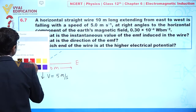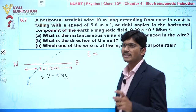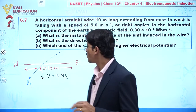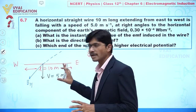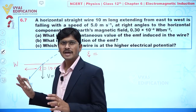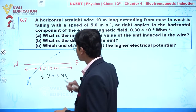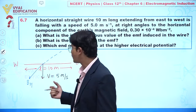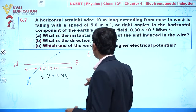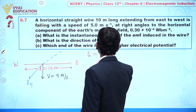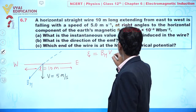Our objective is to find the instantaneous value of induced EMF. The instantaneous induced EMF is given by e = e₀ sin(ωt), or alternatively, whenever we have a wire placed in a magnetic field with a certain velocity, an induced EMF is generated. The important point is that the horizontal component of the magnetic field, the velocity, and the length of the wire are all mutually perpendicular. So we can write: e = B_H × v × l.